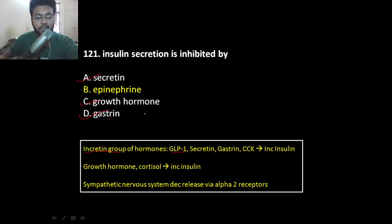Secretin and Gastrin are a group of incretin-like hormone along with glucagon-like peptide 1. So, these two increase the release of insulin. Growth hormone logically increases the release of insulin because you need glucose for growth. So, you are left with epinephrine and epinephrine decreases the insulin release by alpha-2 receptor.